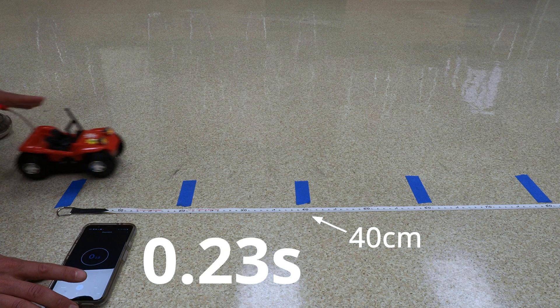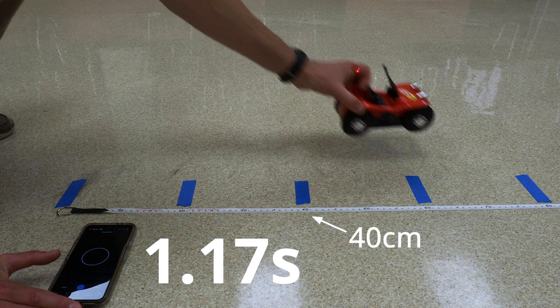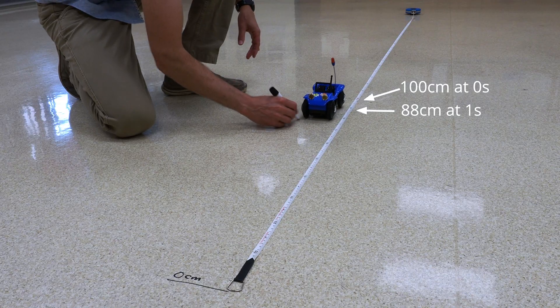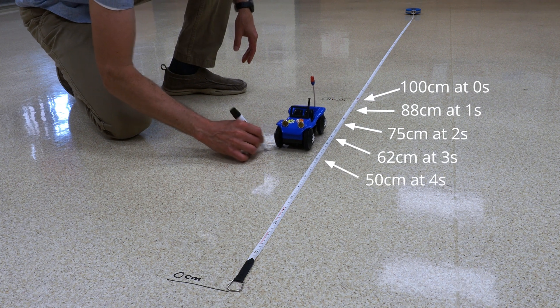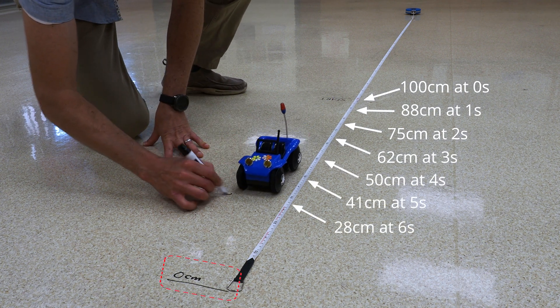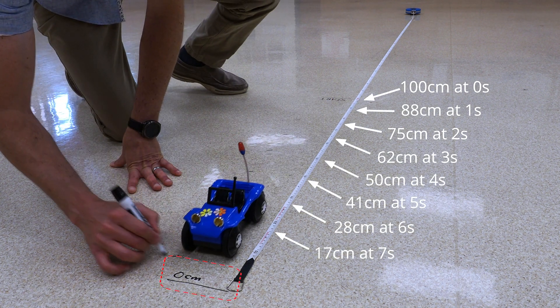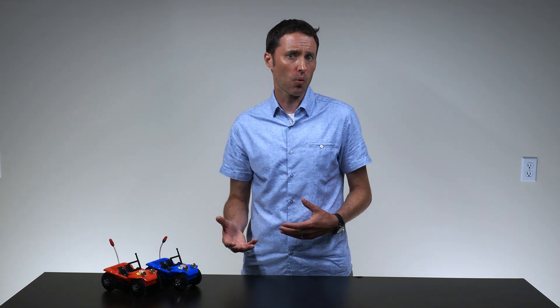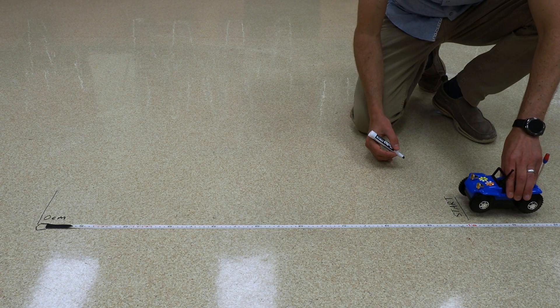The students will need to mark the zero position on the floor before collecting data and decide if the front or the back of the car will represent the car's position along the measuring tape. A common method for collecting data is to use a dry erase marker to mark the position of the car every one or two seconds as it moves along the floor.